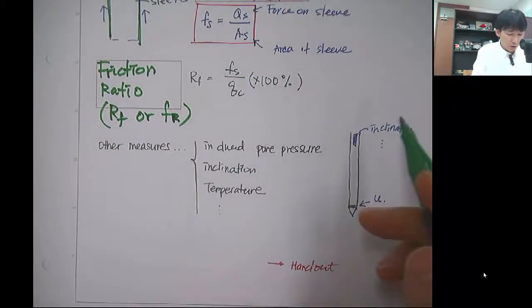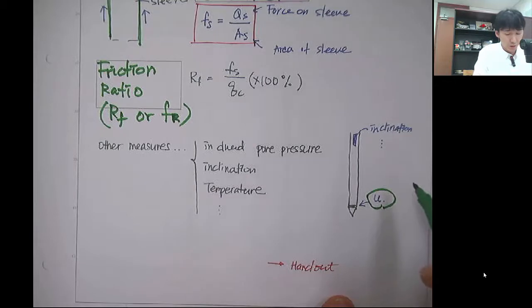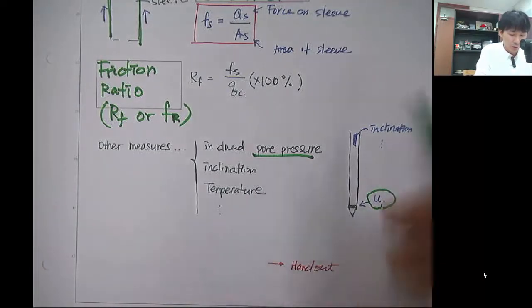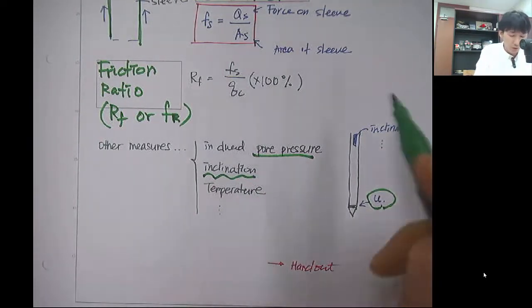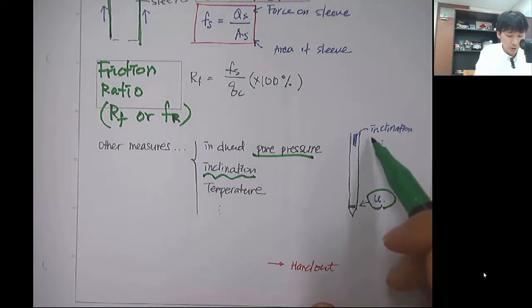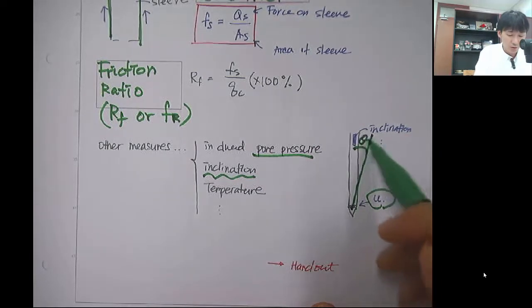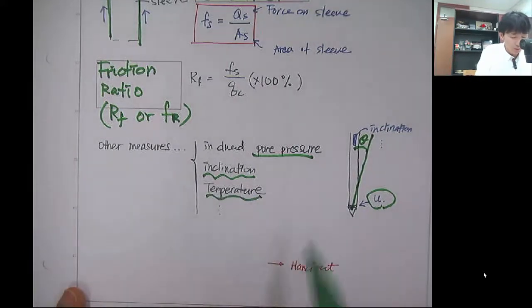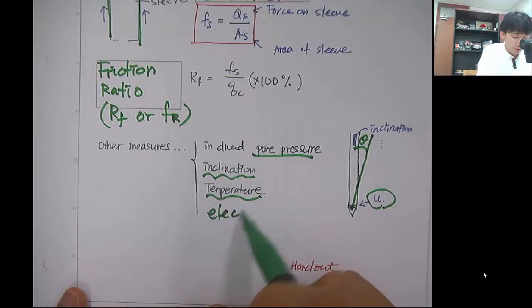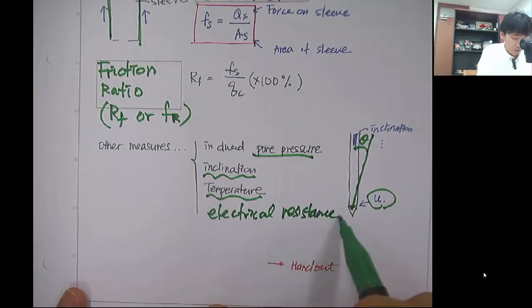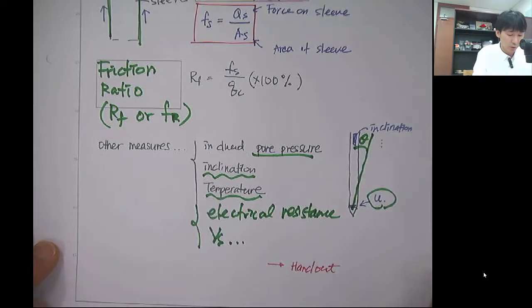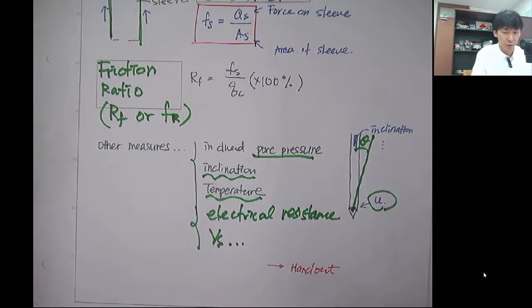At the cone, you can also install pore pressure measurement by installing piezo material, so you can measure the pore pressure or pore pressure dissipation rate. And inclinometer, using the inclinometer, you can measure the inclination, which gives you information whether this cone is deviated, so you can correct it for depth calculation. And temperature, also electrical resistance, or shear wave velocity. There are many attempts to install sensors at the cone to get more rich information.